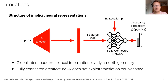However, this representation, despite being able to produce smooth outputs and handle complex topology, has certain limitations that stem from the structure of implicit neural representations. The way it works is that an input x is encoded using a feature representation, and then a 3D point location is also fed into a simple fully connected network — such as a residual network — that outputs an occupancy probability for that particular 3D location.